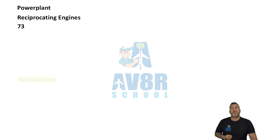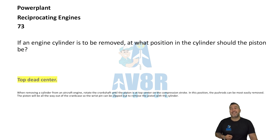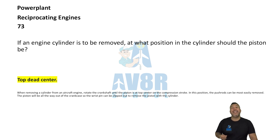Number 73: top dead center. If an engine cylinder is to be removed, in what position in the cylinder should the piston be? Top dead center.